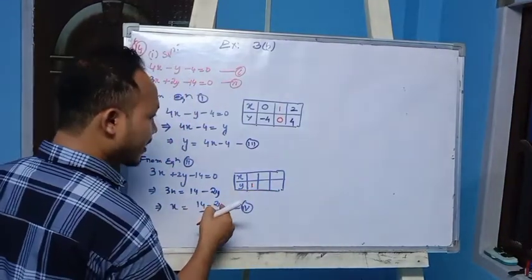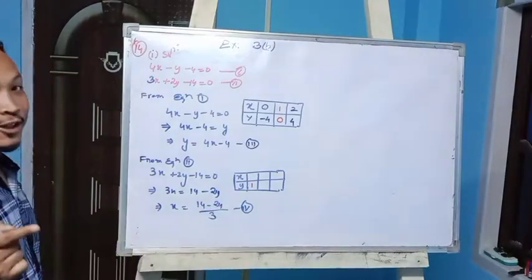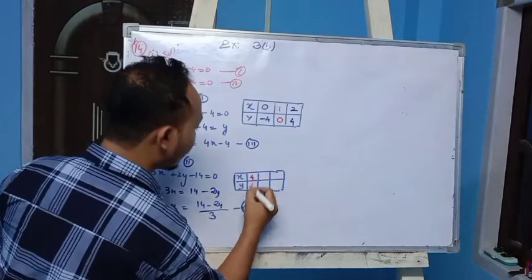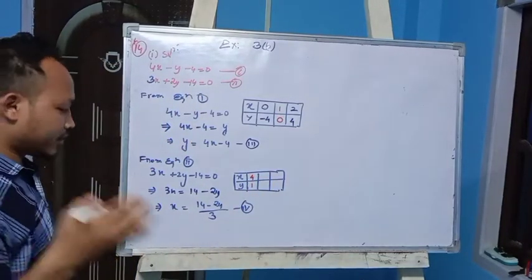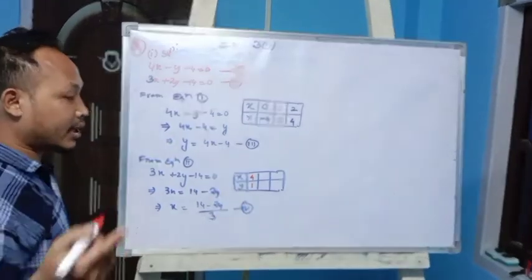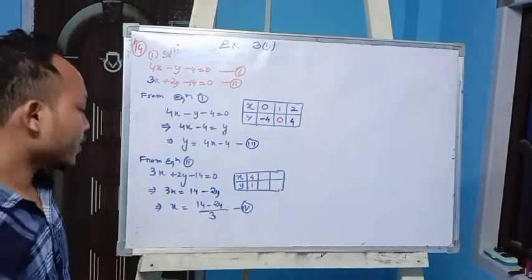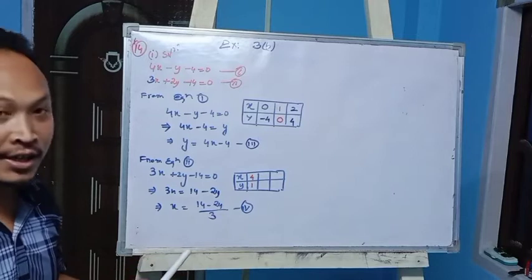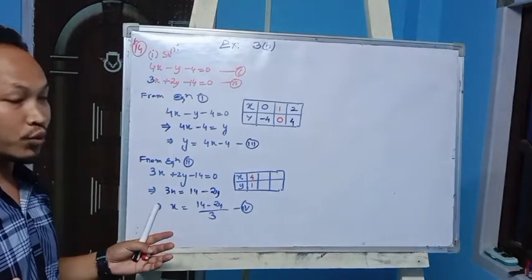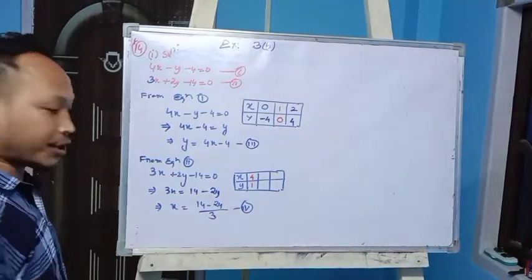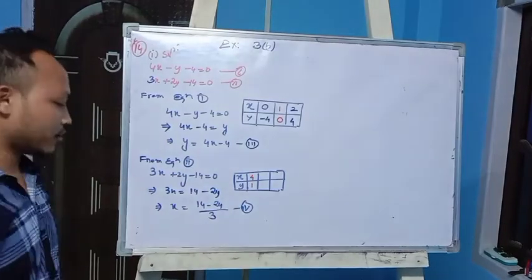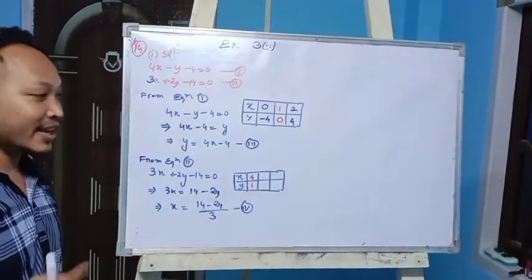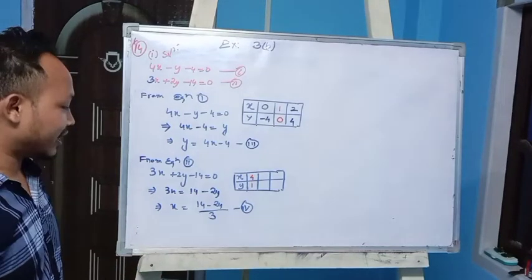Continuing the table: if y equals 2, then 2 times 2 is 4, and 14 minus 4 is 10. 10 divided by 3 is not exact, so skip. If y equals 3: 2 times 3 is 6, and 14 minus 6 is 8. 8 divided by 3 is not exactly divisible. If y equals 4: 2 times 4 is 8, and 14 minus 8 is 6. 6 divided by 3 equals 2, so x equals 2. Take y equals 4.